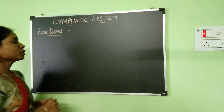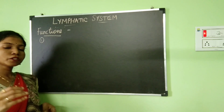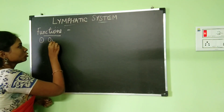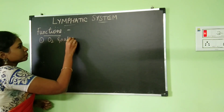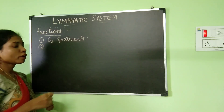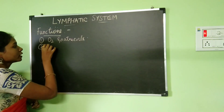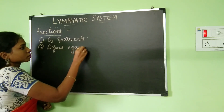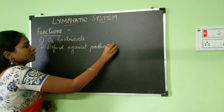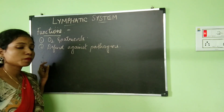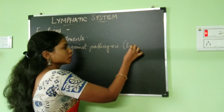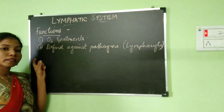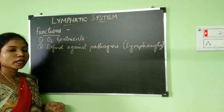Now let's look at the functions of the lymphatic system. The first function of lymph is that it transports oxygen as well as nutrients to different parts of our body. The second important function of lymph is that it defends our body against pathogens. Lymph is able to defend the body against pathogens because it consists of WBCs — specifically lymphocytes — which fight against the pathogens entering our body.